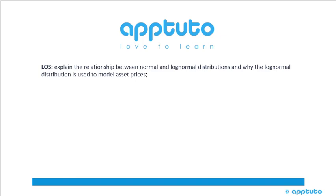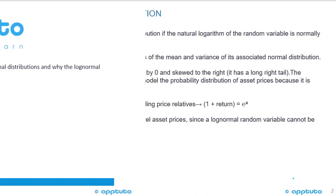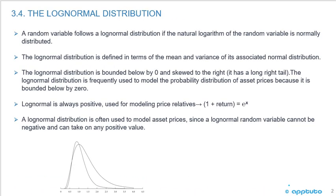This LOS explains the relationship between normal and lognormal distributions and why the lognormal distribution is used to model asset prices. A random variable follows a lognormal distribution if the natural logarithm of the random variable is normally distributed. Like the normal distribution, the lognormal distribution is defined in terms of the mean and variance of its associated normal distribution.